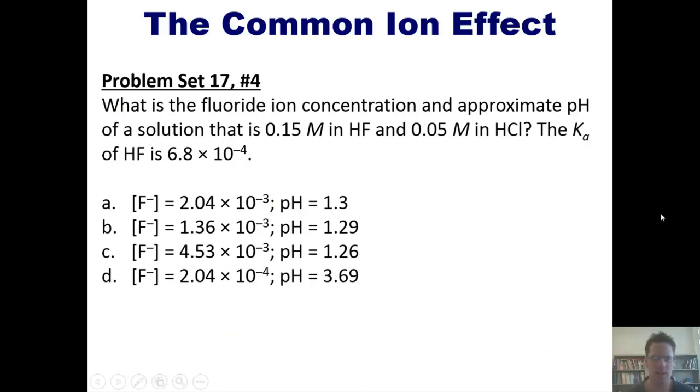What is the fluoride ion concentration and approximate pH of a solution that is 0.15 molar in HF and 0.05 molar in HCl? The Ka of HF is 6.8 times 10 to the negative 4. I invite you to attempt this on your own. Then if you wish, you can click this link, which will take you to a separate video in which I'll show you how to do it on the board.